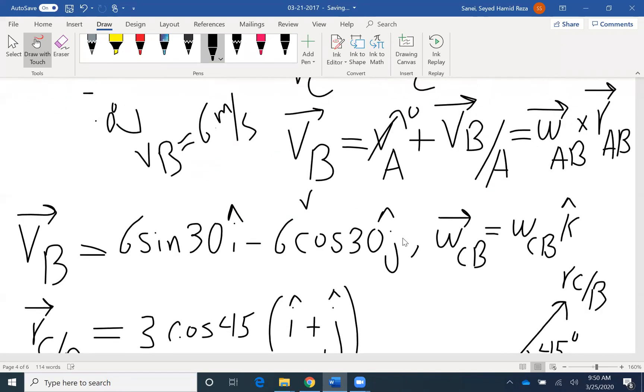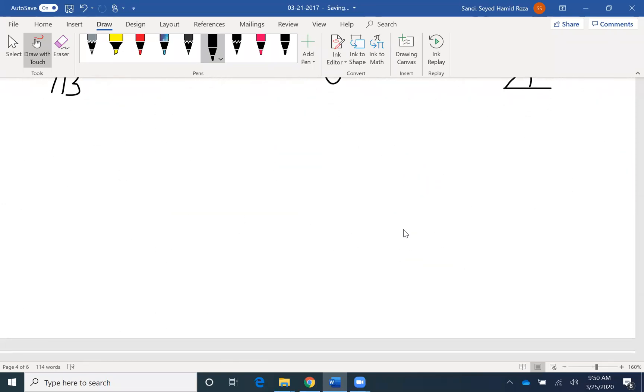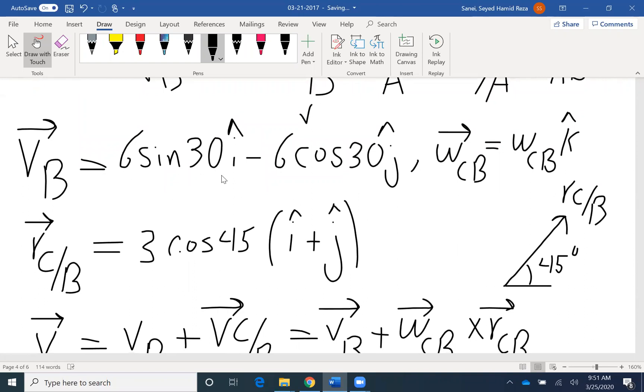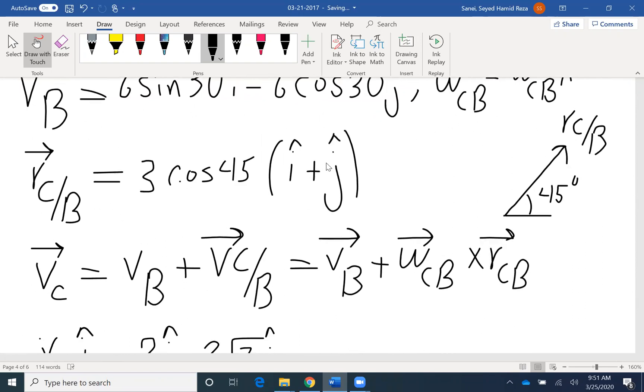Now I have everything in terms of vector form. I have omega, I have R, I have VB, and I have VC. So I can write my equation here saying that I want to find VC. I know VC is VB plus VC over B or VB plus omega CB cross RCB. What is VC? It would be negative VCI. VB would be 3I, negative 3 square root of 3. If we look at it here, it would be 6 sine 30, so it would be 3I. And then cosine 30, which is square root of 3 over 2, so it would be negative 3 square root of 3J.